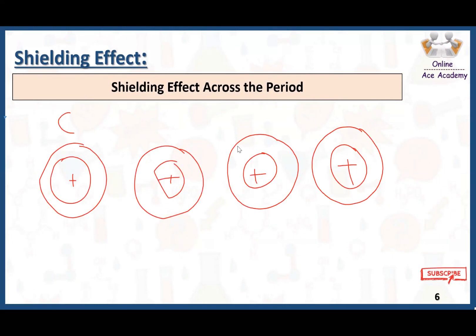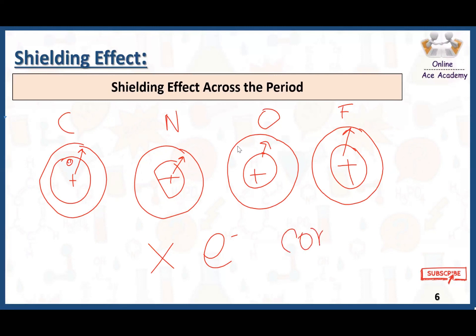For example, in carbon, nitrogen, oxygen, and fluorine, the number of shells is the same. The atomic number and number of electrons increase, but what matters for shielding is the number of shells acting as shields. Each of these elements has just one shield between the nucleus and the outermost electrons. So shielding effect across a period remains constant — atomic number increases, number of electrons increases, but shielding effect stays the same.